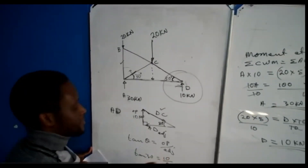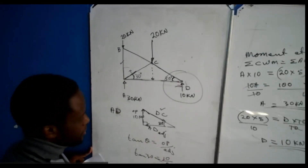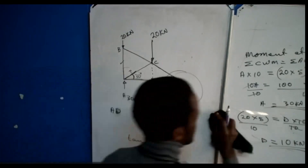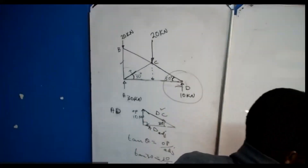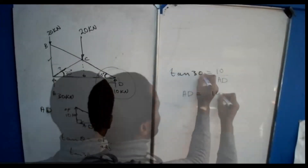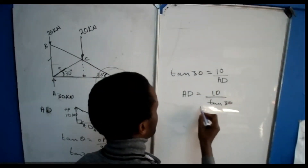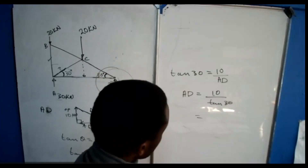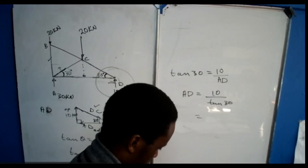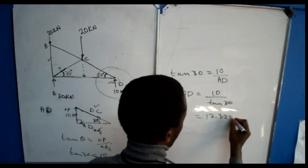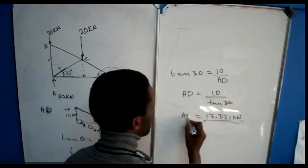To calculate AD: with reference to our 30° angle, DC is opposite and AD is adjacent. We use tan θ = opposite over adjacent. So tan 30° = 10 / AD. Cross-multiplying and dividing, AD = 10 / tan 30°. Calculating this gives AD ≈ 17.321 kN.